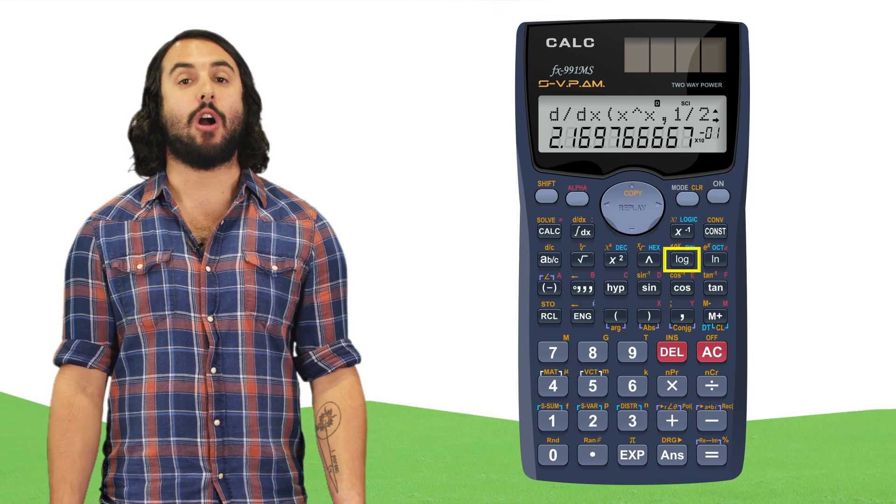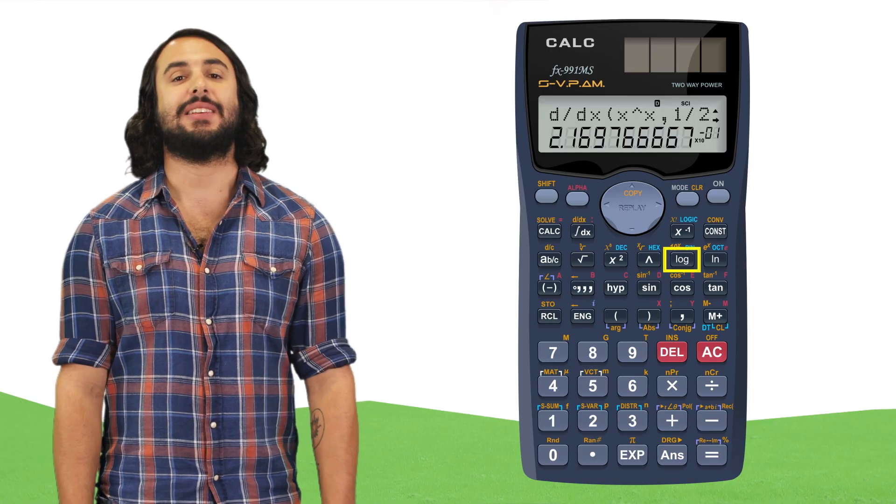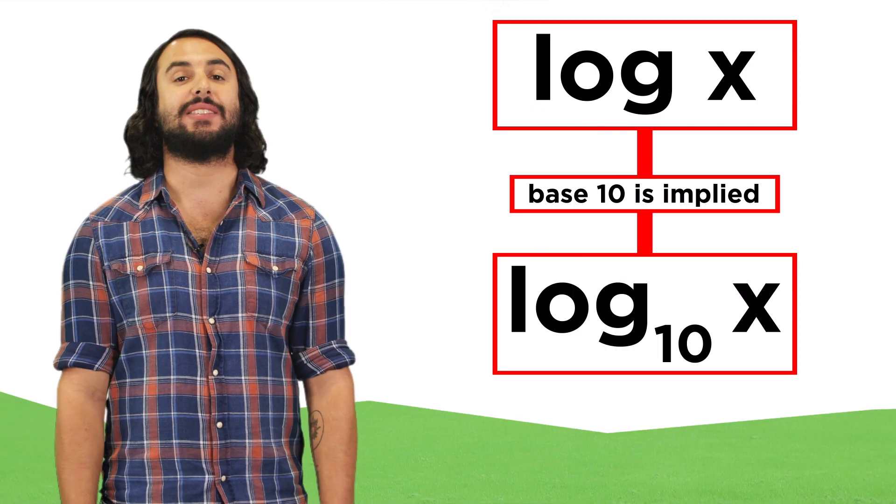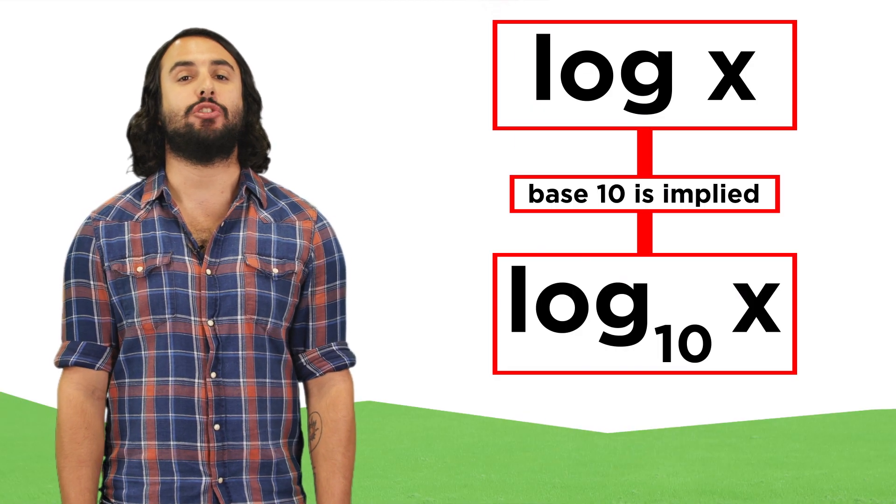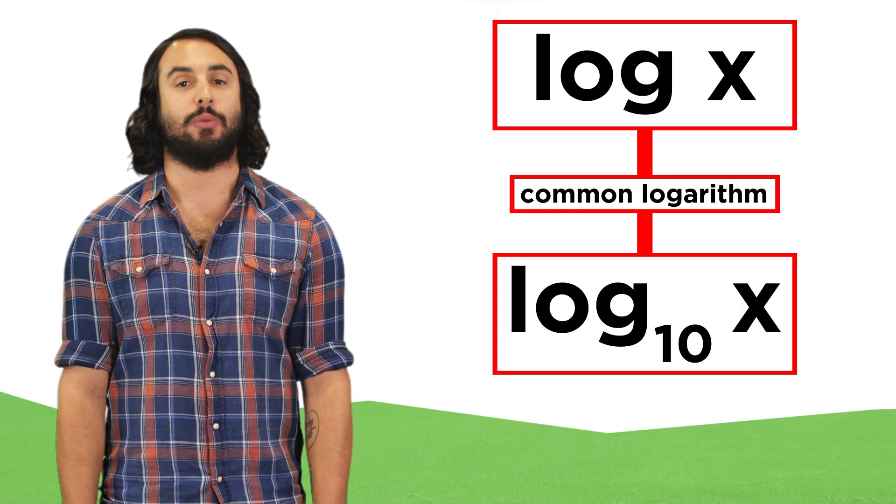You've probably noticed the log button on your calculator, but you may wonder what base is implied by this button, since every logarithm must have a base. If no base is written, then it is implied to be a base 10 log. This is called the common logarithm, and we use it for a lot of practical purposes.